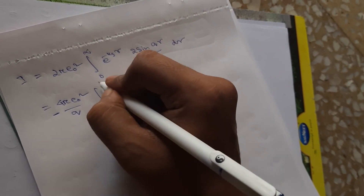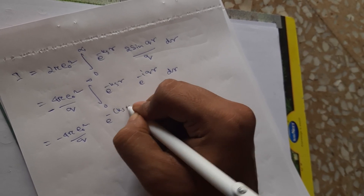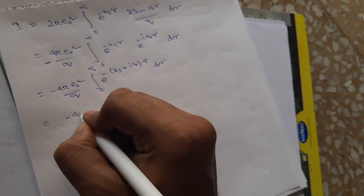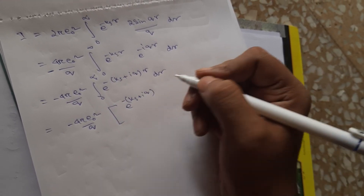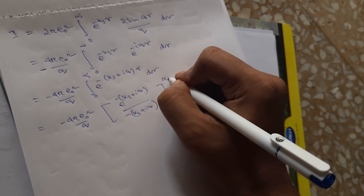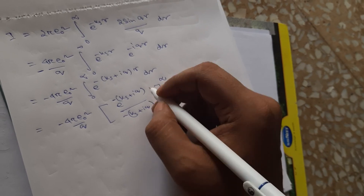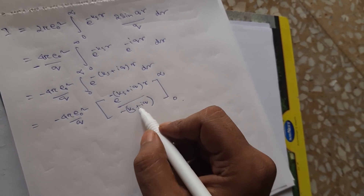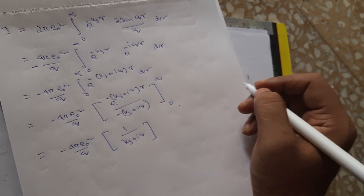We now evaluate the radial integration. We need minus 4π e₀² over q times the integral from 0 to infinity of e to the power minus (k_s + i q) r dr. This evaluates to 4π e₀² over q times 1 divided by (k_s + i q), since the term at r equals infinity vanishes and the lower limit gives 1.